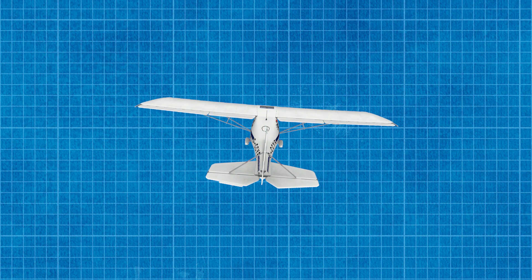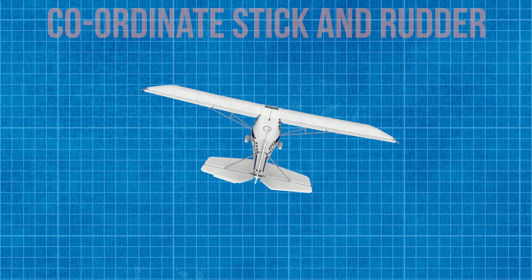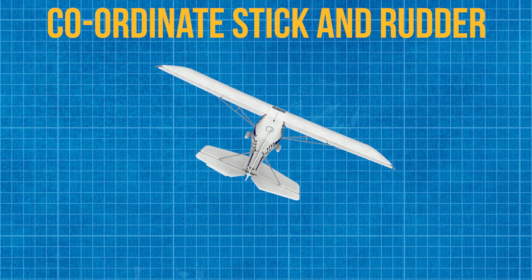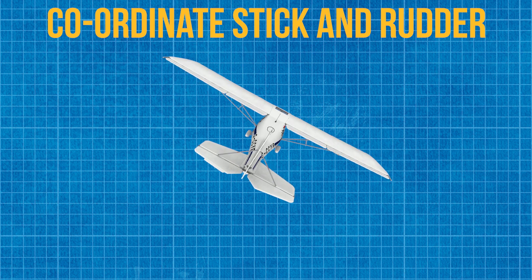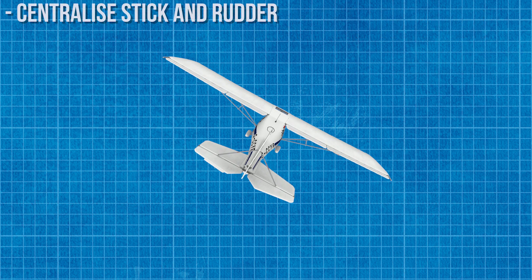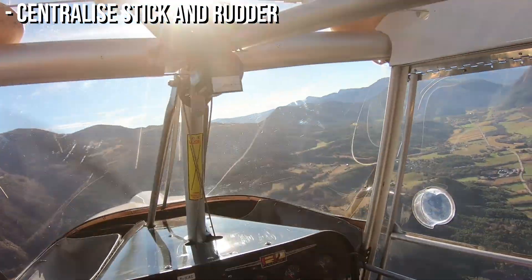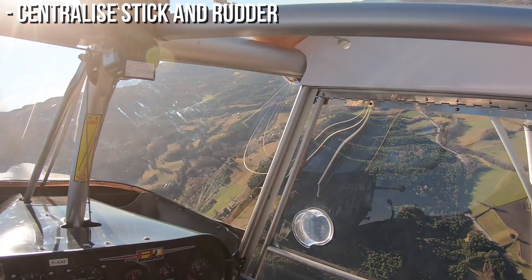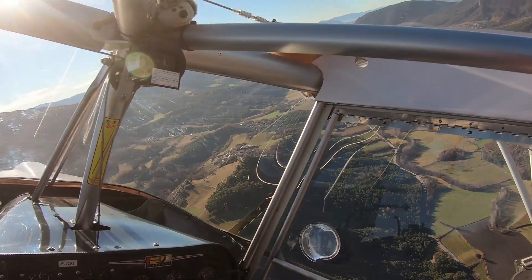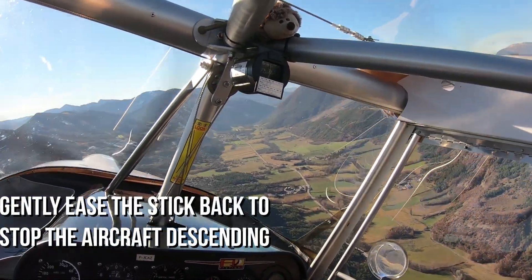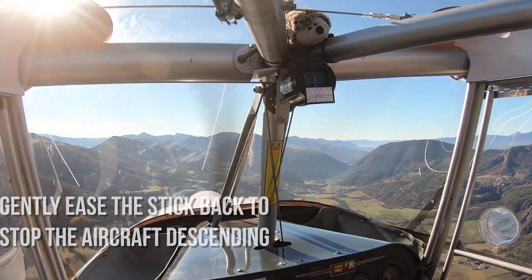Now let's enter the turn. Roll the wings over to the left or the right and coordinate this turn with the rudder pedals. Once you have reached your desired bank angle, centralise the stick as well as your rudder pedals and the aircraft should stop rolling. Start easing the stick back, but use the horizon as your primary reference.